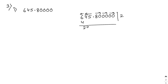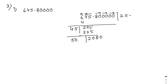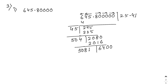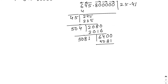2×2=4. First digit of answer is 2. Bring down 45 giving 245. Double of 2 is 4. Try 45×5=225. After subtraction, remainder is 20. Place the decimal point. Bring down 80 giving 2080. Double of 25 is 50. Try 504×4=2016. Remainder is 64. Bring down 00 giving 6400. Double of 254 is 508. Try 5081×1=5081.